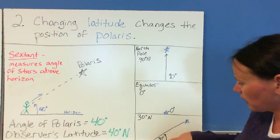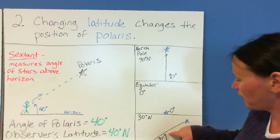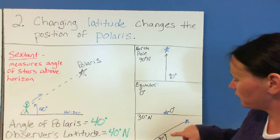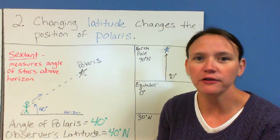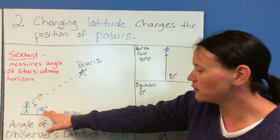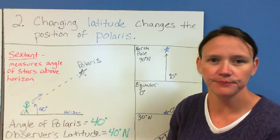And then this last one here, that says 30 degrees. If the person sees that the Polaris is 30 degrees above the horizon, they are at 30 degrees north. So this number right here, this angle is always equal to the latitude.